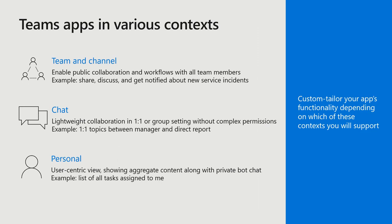When building a Teams app, you can enable it for different contexts. You can enable it for Teams and channels so that various members of that team can collaborate together and access your app's functionality. You can bring it into private chats — one-on-one or group chats — into lightweight conversational contexts. And lastly, you can also deliver your Teams app for personal productivity, such as a personal dashboard or user-centric view. We really provide all these different entry points for your app.